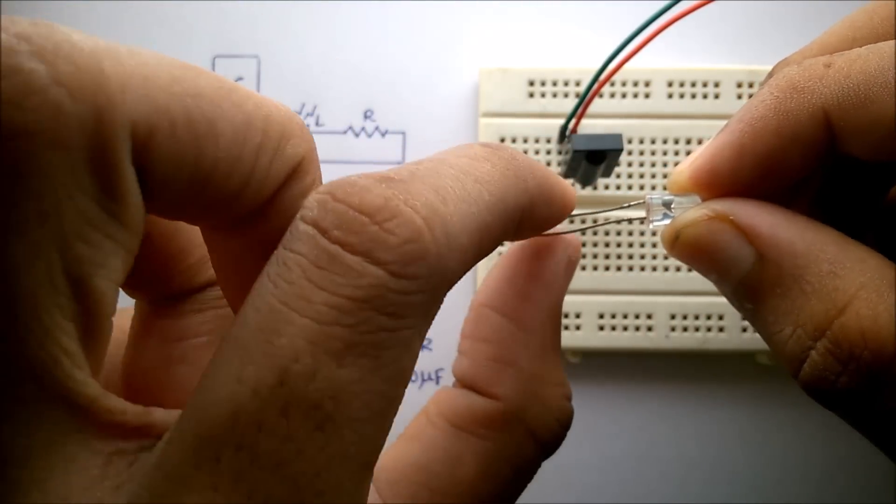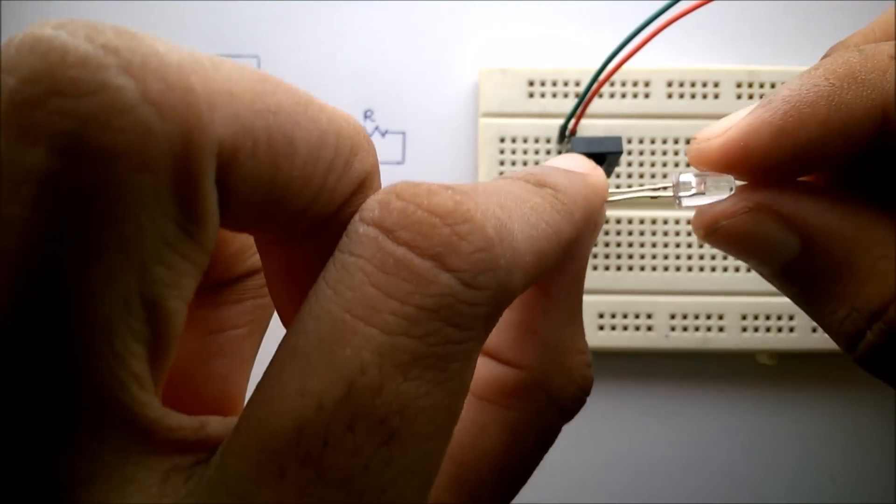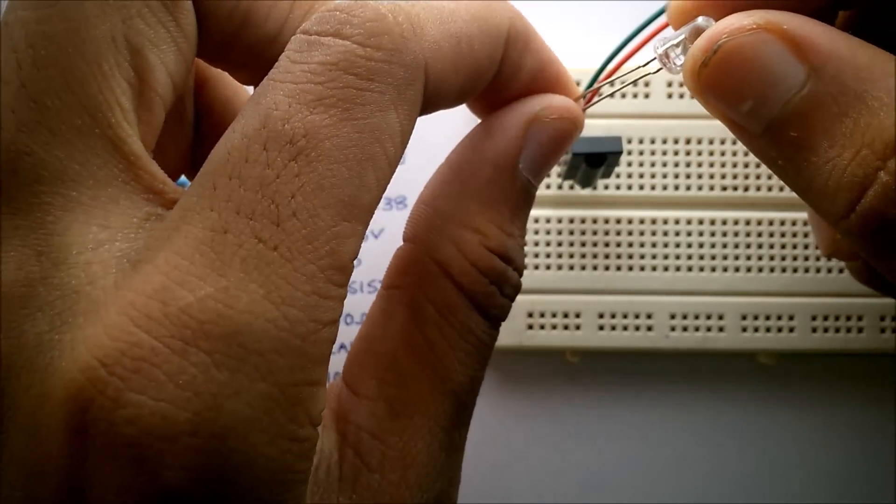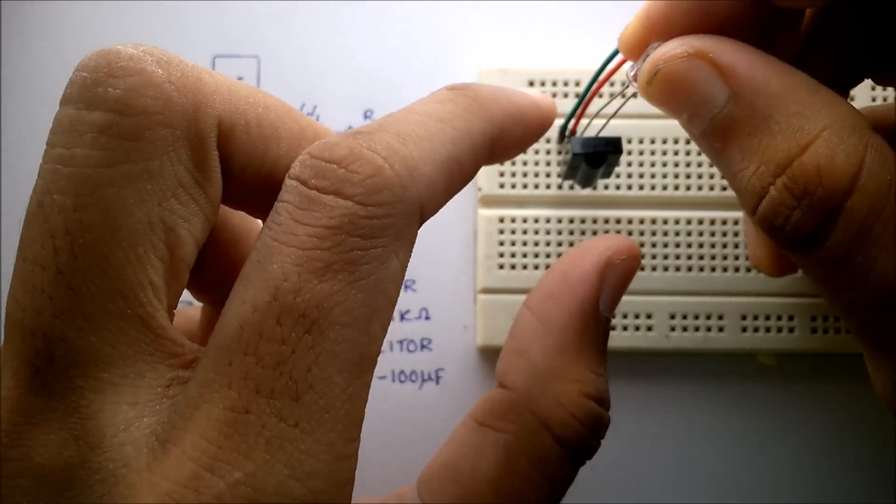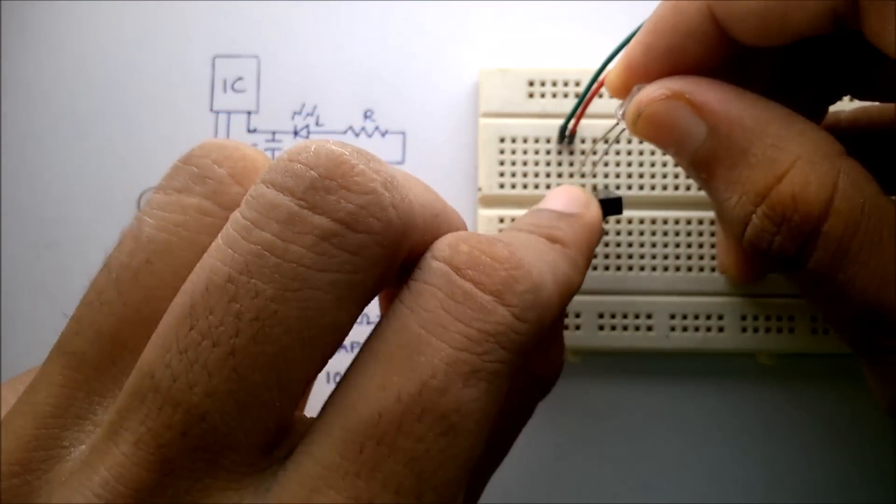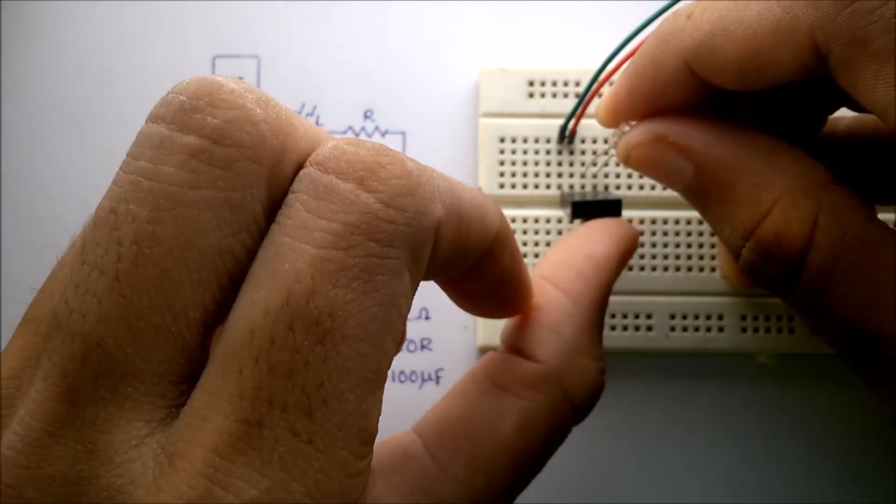We should be connecting the negative of the LED to the output pin of TSOP 1738. So I am connecting it in this way.